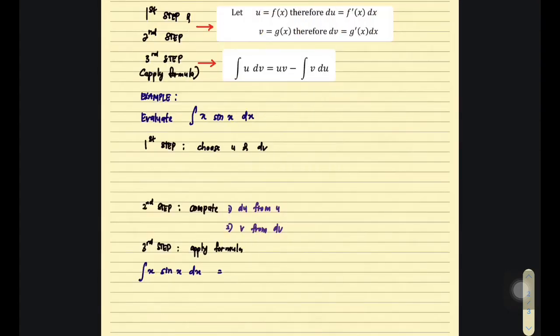First step we need to choose u and dv. We need to find out du and also find out v. That is the first and the second step. And then the next step we need to apply this formula. This is the formula of integration by parts.